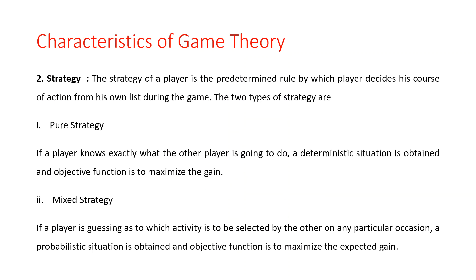The second characteristic of Game Theory is the strategy. In the game, we first require a set of rules or a set of strategies, and each player has a different strategy. The strategy of a player is the predefined rule by which the player decides his course of action from his own list during the game.